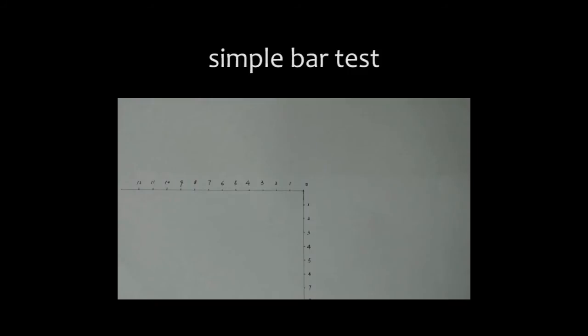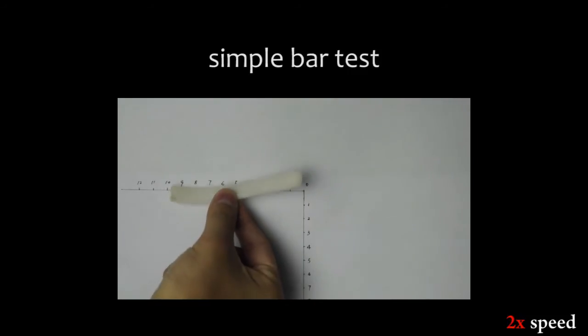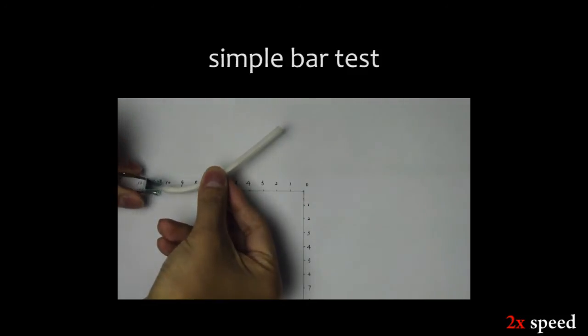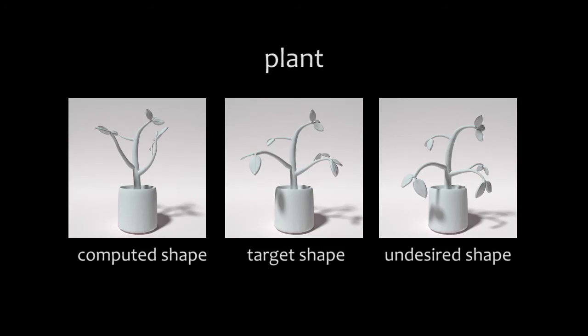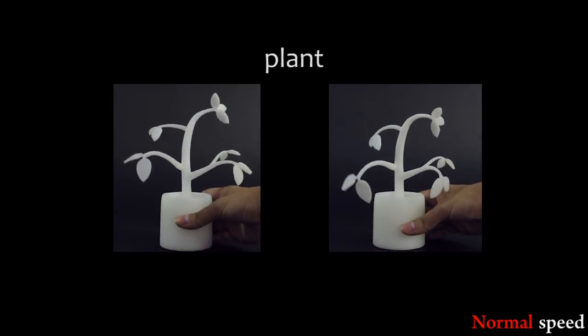We fabricated several models designed by our system to validate the method. The first one is a simple bar. We require the bar model to be horizontal under the force of gravity. We also designed plants that deformed to visually pleasing shapes under the force of gravity.